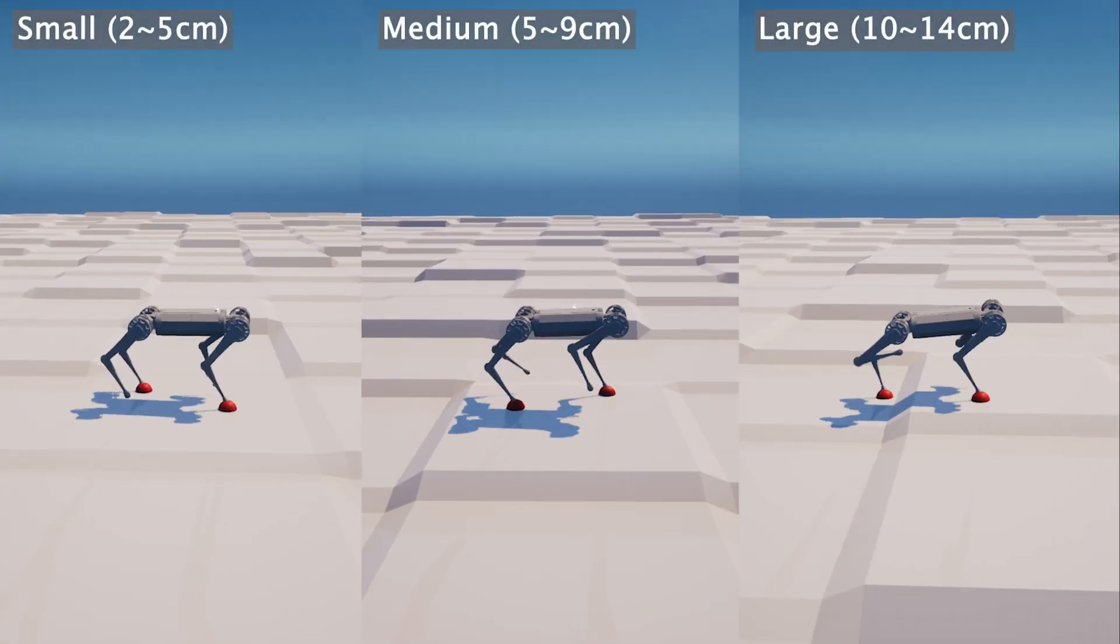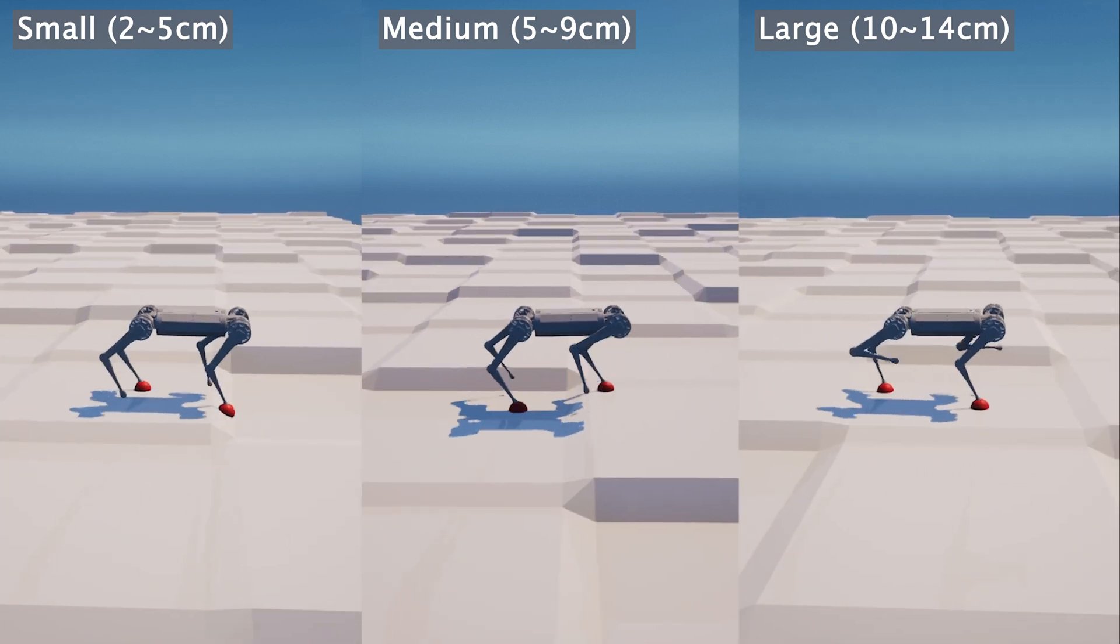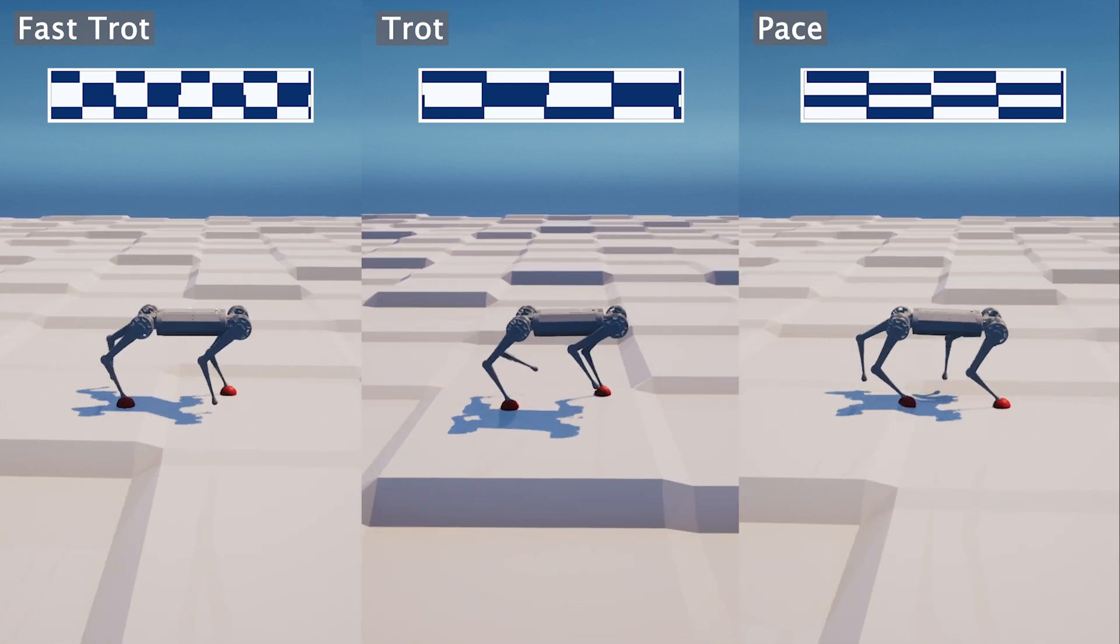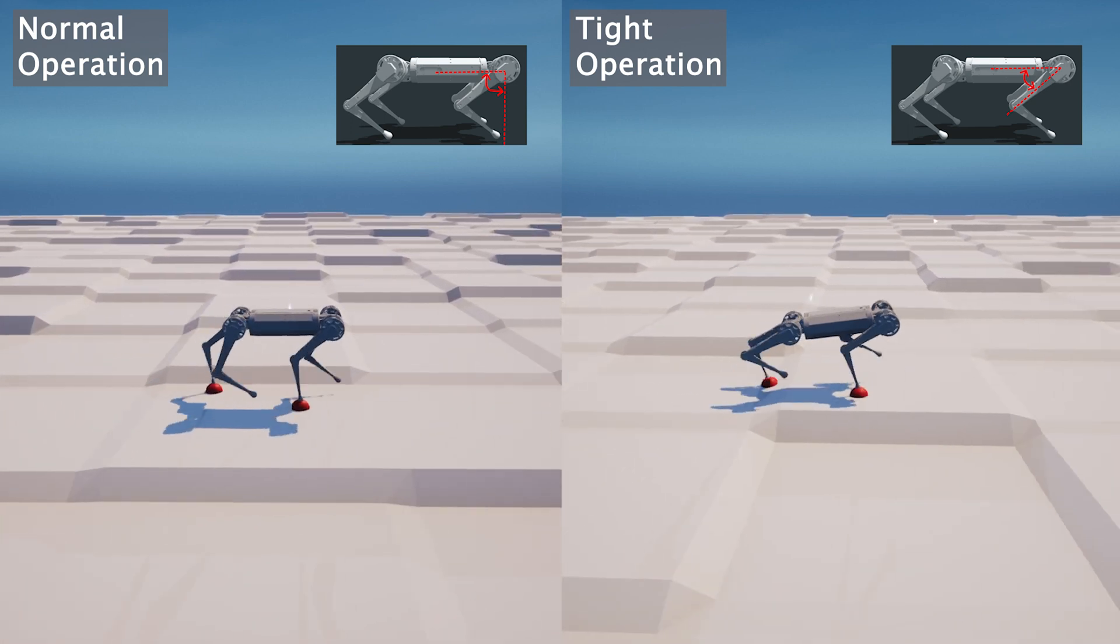Through constraint modification within our framework, robots are further trained to have varying foot clearance, distinct gait patterns, and a different operating joint angle range.